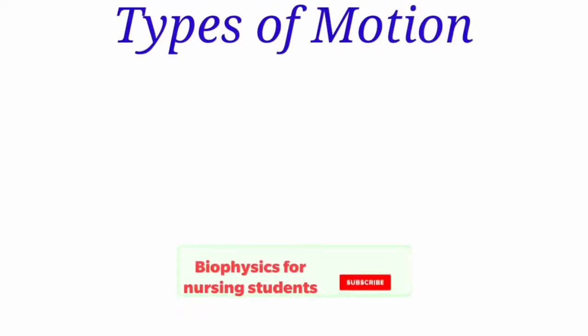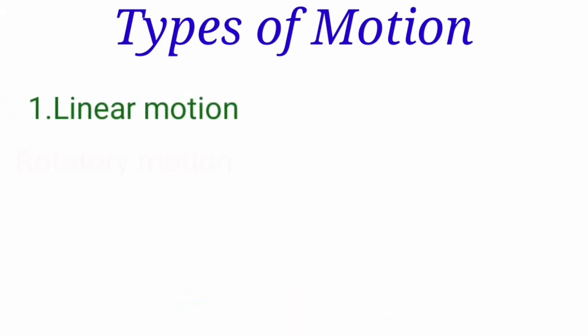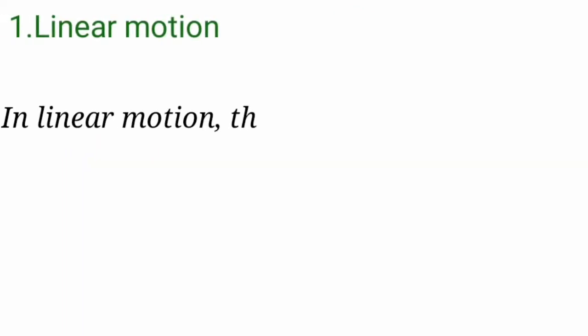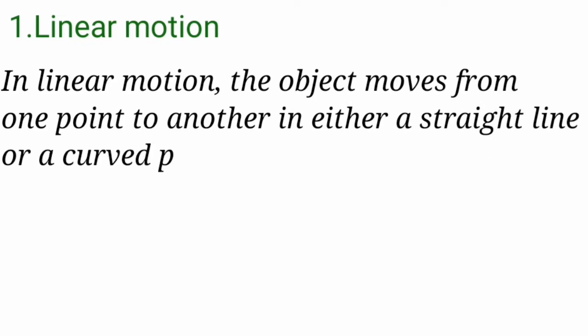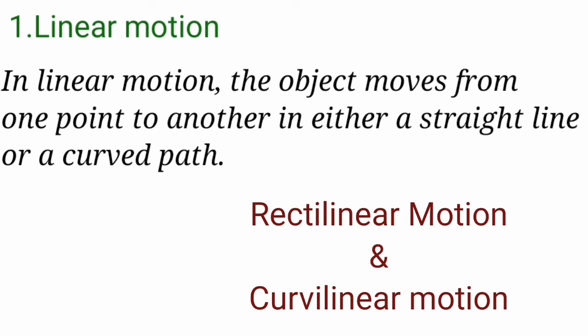Motion is of three types: linear motion, rotatory motion, and oscillatory motion. In linear motion, the object moves from one point to another point in a straight line or in a curved path. On the basis of the path taken by an object, linear motion is further classified as rectilinear motion and curvilinear motion.